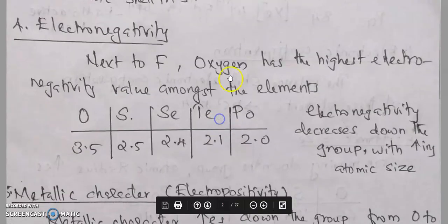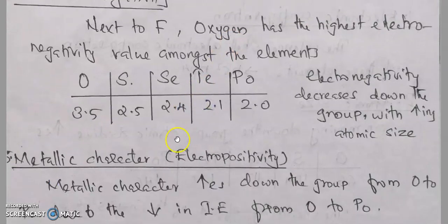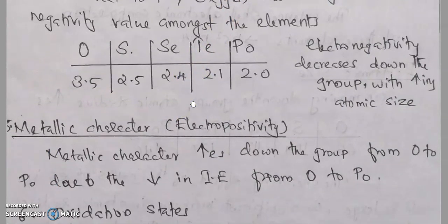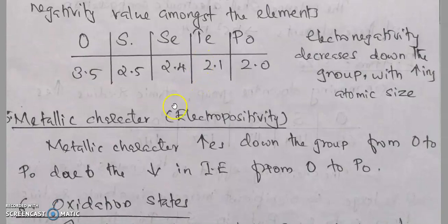Metallic character, or electropositivity, increases down the group from oxygen to polonium due to decreasing ionization energy. The metallic character of oxygen is very low, while the metallic character of polonium is high.